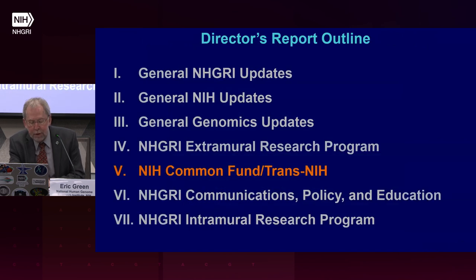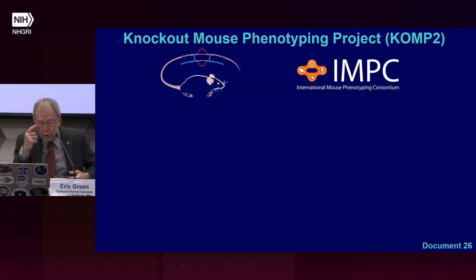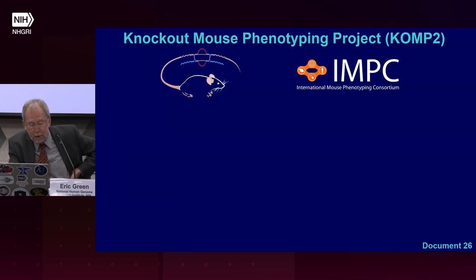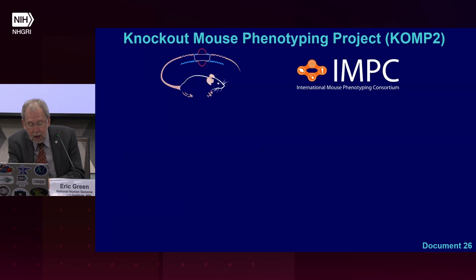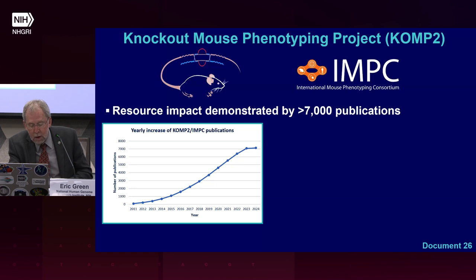Moving on to the NIH Common Fund and other trans-NIH efforts: the Knockout Mouse Phenotyping Project, or KOMP2, is a trans-NIH research program generating a comprehensive resource of null mutant mice and phenotype information. KOMP2 is a founding member of the International Mouse Phenotyping Consortium, or IMPC, comprising 21 centers in 15 countries. To date, KOMP2 investigators have developed and phenotyped around 5,500 strains of knockout mice, contributing to more than 10,000 strains created by the IMPC, with nearly 700 articles per year over the last decade and over 7,000 publications total.